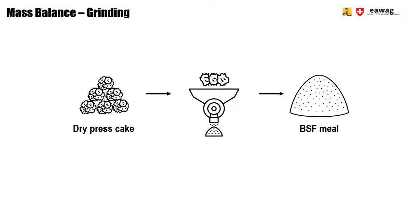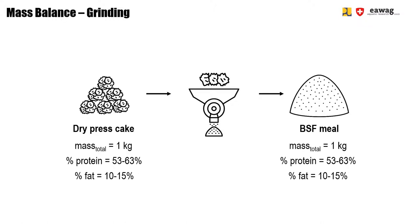To make BSF Meal, a grinding operation is required. Here you see the mass balance: one kg of dry press cake results roughly in one kg of BSF Meal. The protein and fat content are the same in BSF Press Cake and BSF Meal — the composition is not changed, only the texture. Dry press cake is very rough in form, but extruders and pelletizers require fine input material, which is why the grinding step is necessary.